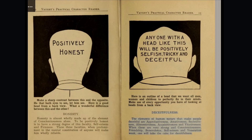Deceitfulness. The elements of human nature that make people deceitful are approbativeness, amativeness, secretiveness, alimentiveness, acquisitiveness and vitativeness. When these are very strong and conscientiousness, friendship, benevolence, self-esteem, and veneration weak, one will take the cake for deceitfulness.